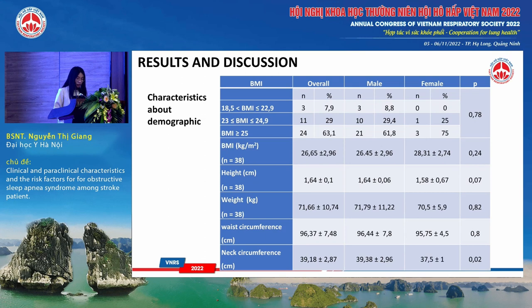There were no differences in body mass index, weight, neck circumference, height, and weight between the two genders in the study. However, there is a statistically significant difference in neck circumference between the two genders with a p-value of 0.02.